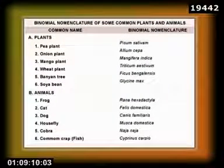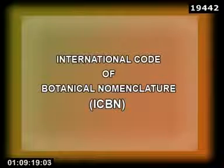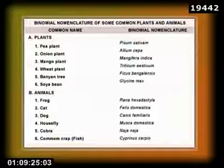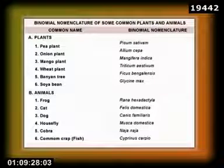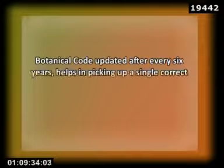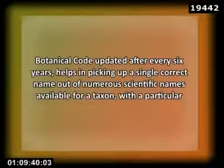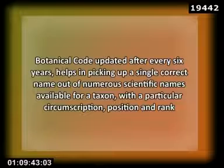3. Nomenclature deals with the determination of a correct name of a taxon. There are different rules for naming different groups of living organisms. Nomenclature of plants including fungi is governed by the International Code of Botanical Nomenclature through its rules and recommendations. This table shows some binomial scientific names of some plants and animals. The Botanical Code is updated after every six years, and helps in picking a single correct name out of numerous scientific names available for a taxon, with a particular circumscription, position and rank.